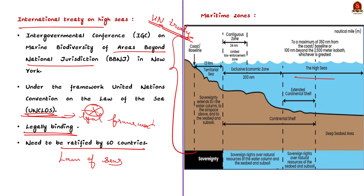An important term here is 'baseline' — the low water line along the coast as officially recognized by the coastal state. Internal waters are the waters on the landward side of the baseline from which the breadth of the territorial sea is measured. Each coastal state has full sovereignty over its internal waters, like its land territory.